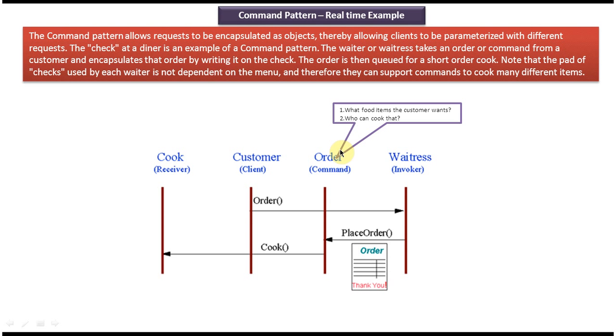The customer will tell what kind of food he wants to the waiter, then the waiter will note it down in the checklist. Then that checklist he will pass it to the cook, so he's the one who will prepare the food and give it back to the waiter, and the waiter will give it back to the customer.